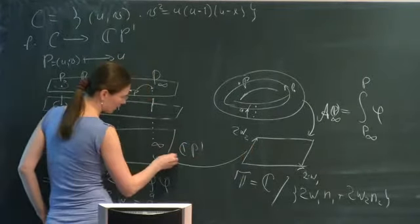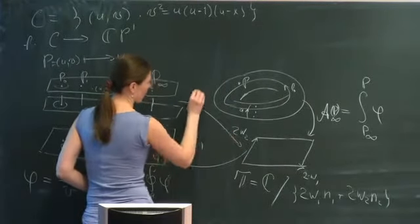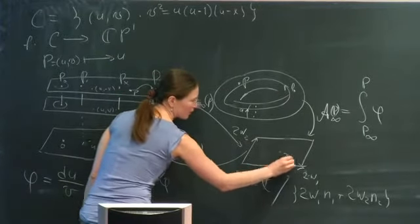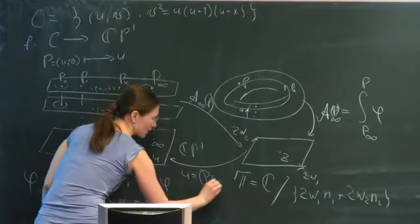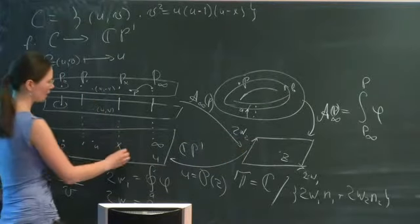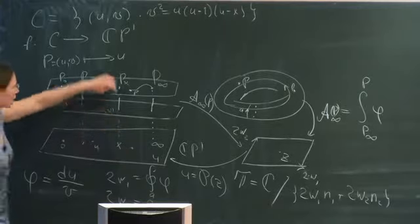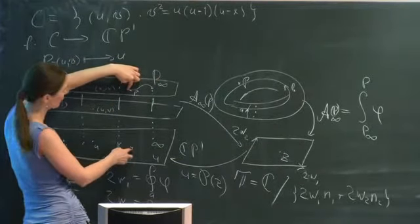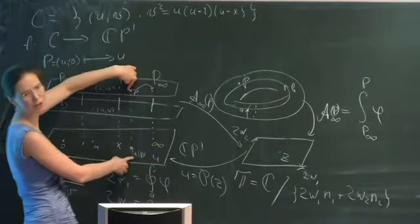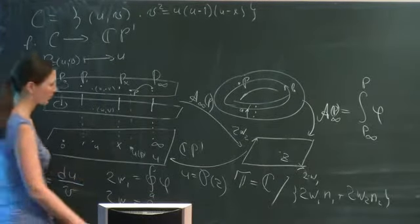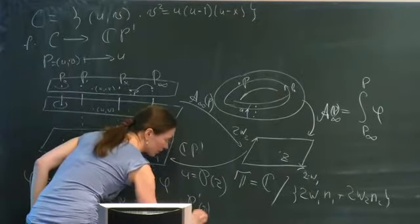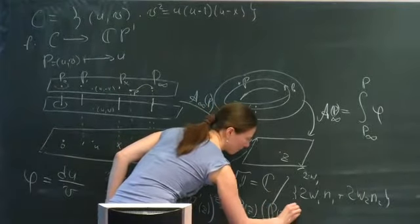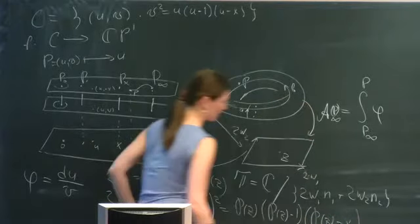The inverse map is given by the Weierstrass p-function. If I denote the point on the torus by z, the Weierstrass p-function takes z back to the elliptic curve. So the two maps are inverse to each other. The Weierstrass p-function is a doubly periodic function with periods 2ω₁ and 2ω₂, which satisfies this equation. This is the setup I will be using.